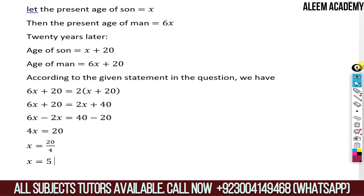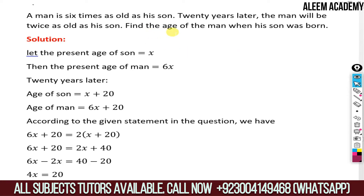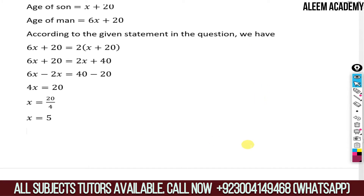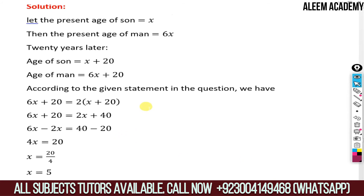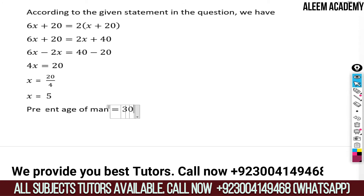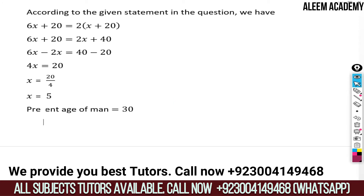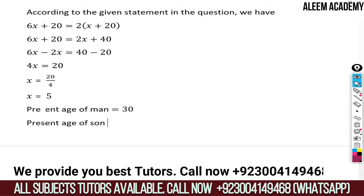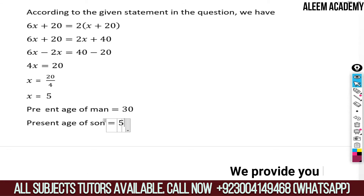So x is equal to 5. x is the present age of the son, so the present age of the son is 5. The present age of the man is 6x, which is 6 times 5, equal to 30. So the present age of man is 30 and the present age of son is 5.